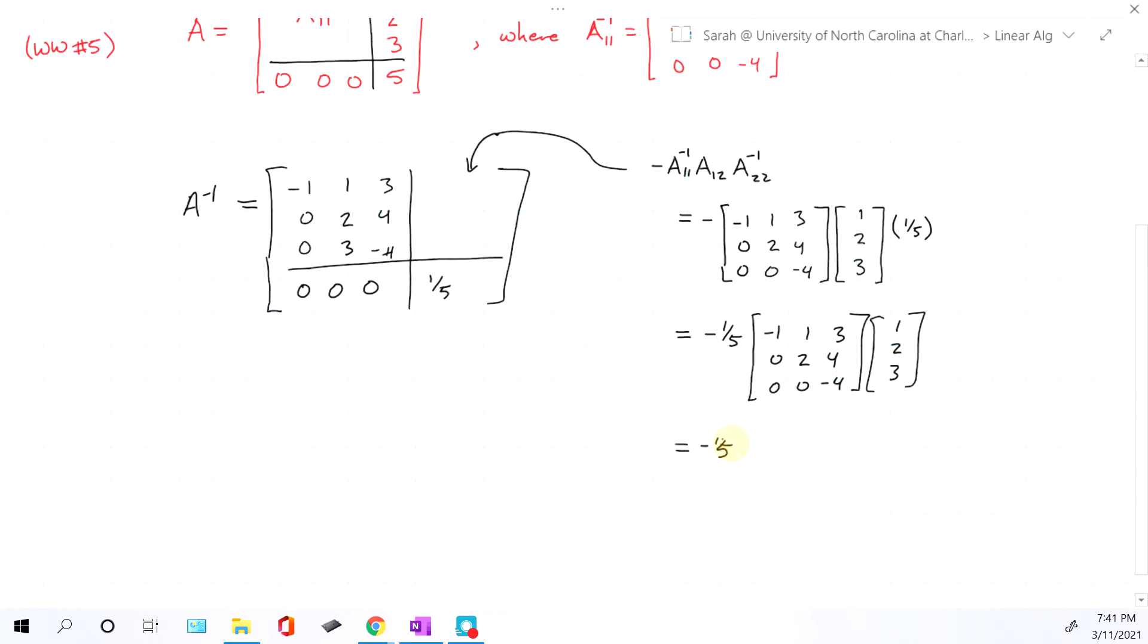So when we do matrix multiplication, we will multiply each row in the first matrix by each column in the second matrix. Notice there's only one column in the second matrix. So you just multiply each row in the first matrix by that column one, two, three.